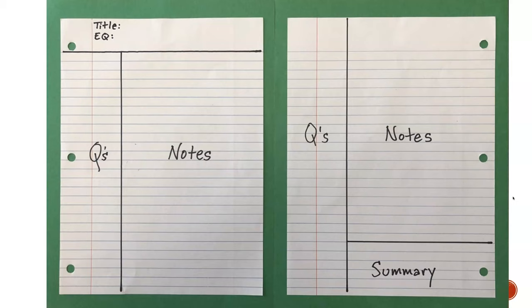A quick reminder for those doing C-notes at home. Most of you in Avid are probably taking your notes this way anyway. Take a piece of paper, mark off a section at the top for your title and essential question. You'll have a column on the left for questions you write to help you study, and you'll write those questions from your notes section. On the back at the bottom you'll have a summary.